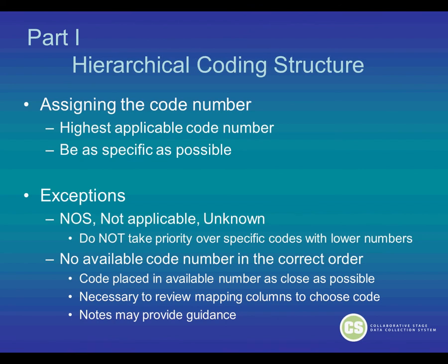When there's no available code number in the correct order to be used when the tables are being mapped, the code is placed in the available number as close as possible. For example, if a code needs to be put between code 22 and 23, that's not possible, so it might be placed in code 26, which is as close as possible. It may be necessary to review the mapping columns to help choose the correct code, and there will always be notes above the tables to also provide guidance in these situations.